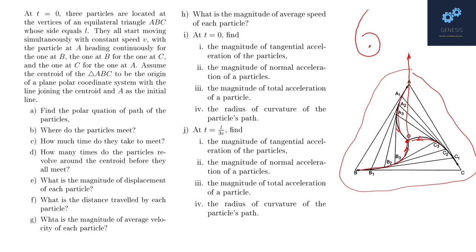At t equals 0, find the magnitude of tangential acceleration of the particles. Second, the magnitude of normal acceleration of the particles. Third, the magnitude of total acceleration of the particle. And the radius of curvature of the particle's path.